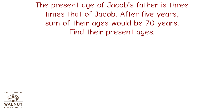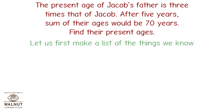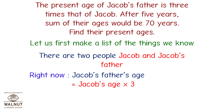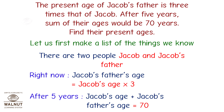The present age of Jacob's father is three times that of Jacob. After five years, the sum of their ages would be 70 years. Find their present ages. Let us first make a list of the things we know. Jacob's father's age equals Jacob's age multiplied by three. After five years, Jacob's age plus Jacob's father's age equals 70.